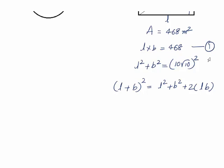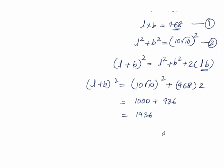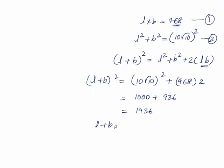Using this first equation and second equation let's try to substitute here. L plus B whole square which makes 10 root 10 whole square plus, and the value of LB is given 468 means into 2 which is 1000 plus 936 which results 1936. Now we can say L plus B, square root of 1936, which is 44 meter.